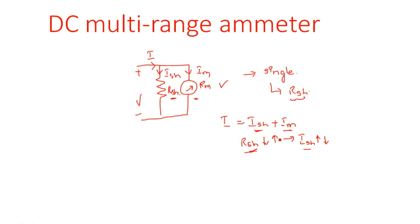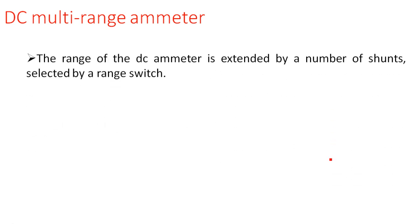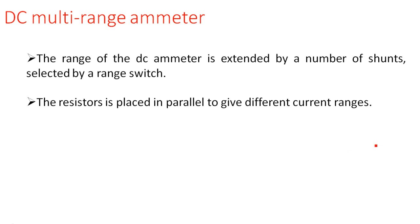Now in this video we are going to see the multi-range ammeter. That means I want a single instrument that will be used for a number of ranges like I1, I2, and so on. The range of a DC ammeter is extended by a number of shunts selected by a range switch. So we use multiple resistors and each and every resistor must be selected by a switch. The resistors are placed in parallel to give different current ranges.